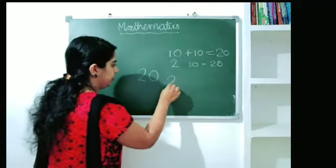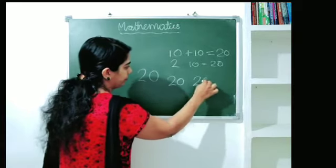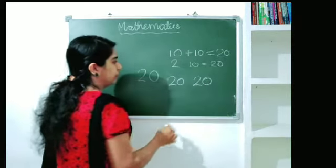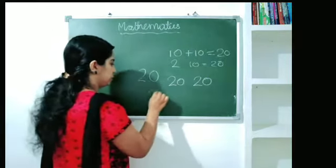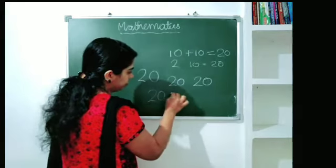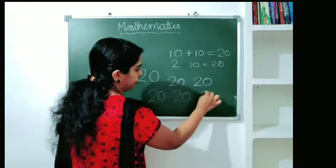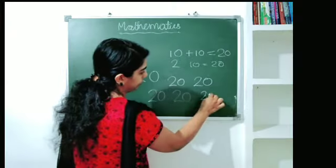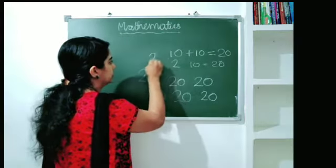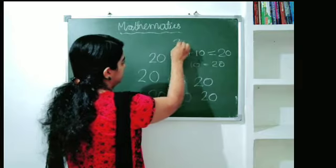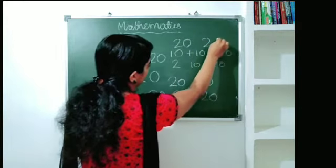Two-zero is 20. Two-zero — that is 20. We will teach this in this class: two-zero is 20.